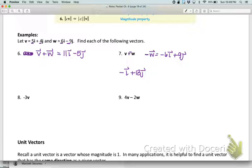For number 8, if I want to multiply v times -3, then I just multiply a times -3 and b times -3. So since v has 5 for a, that means this is going to be -15i and then -12j.